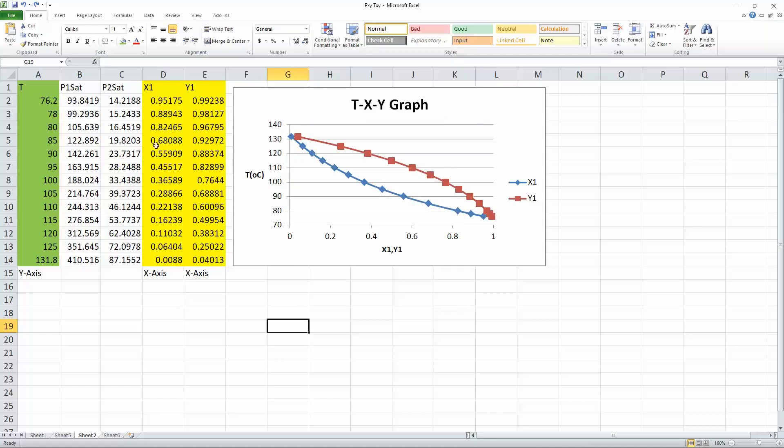Because in the x-axis, there's two values. So for example, if x1 is 0.36, that corresponds to temperature of 100. However, for y1, that would correspond to 0.76.